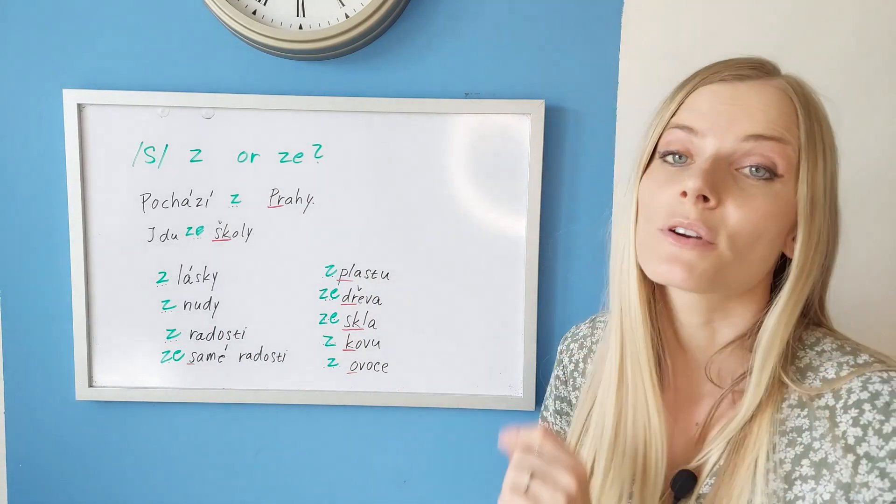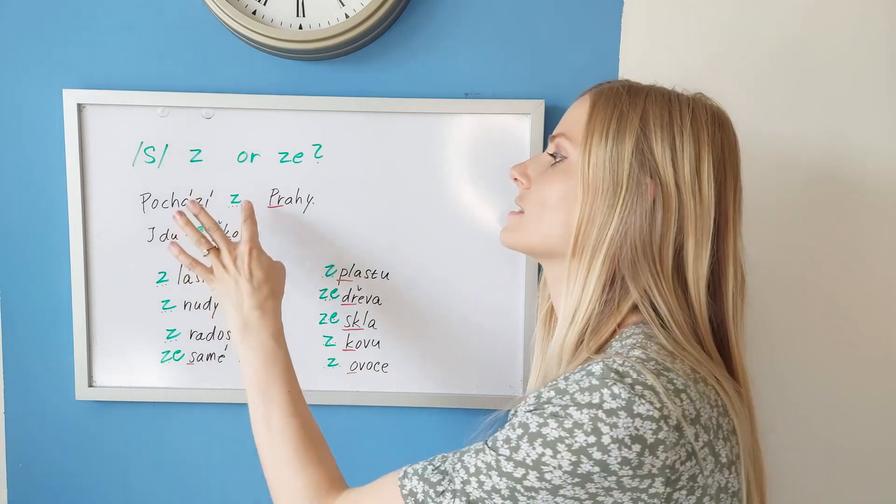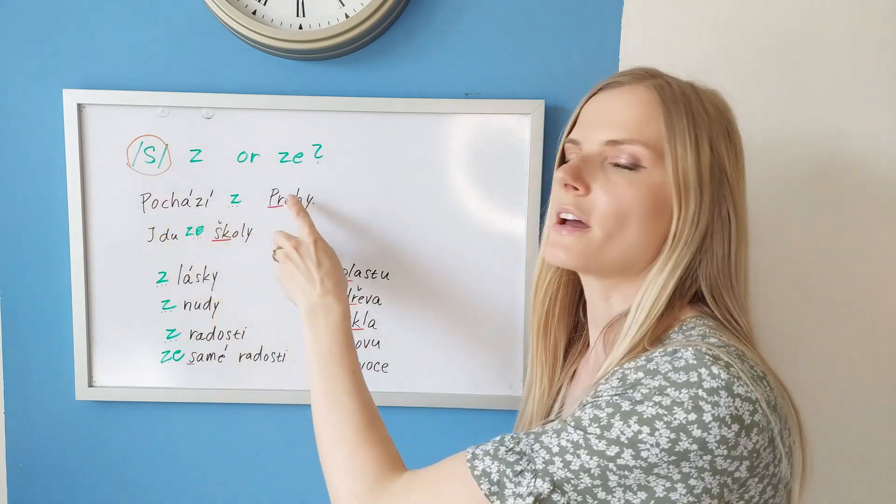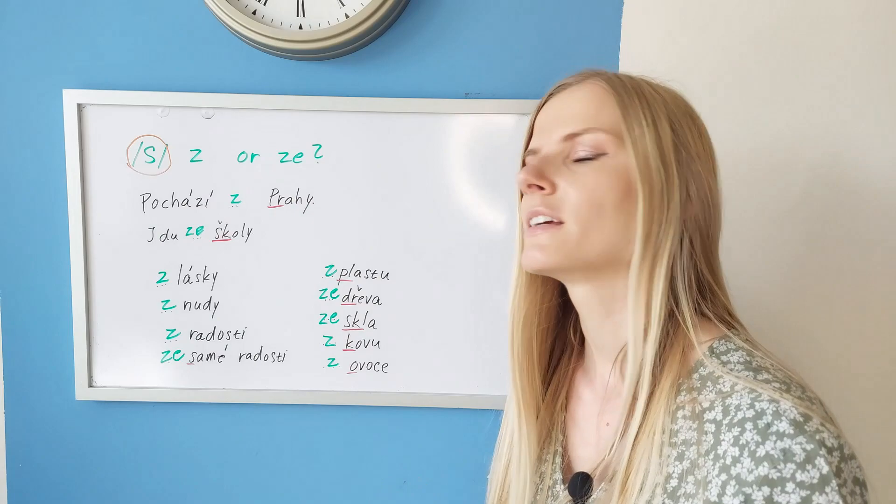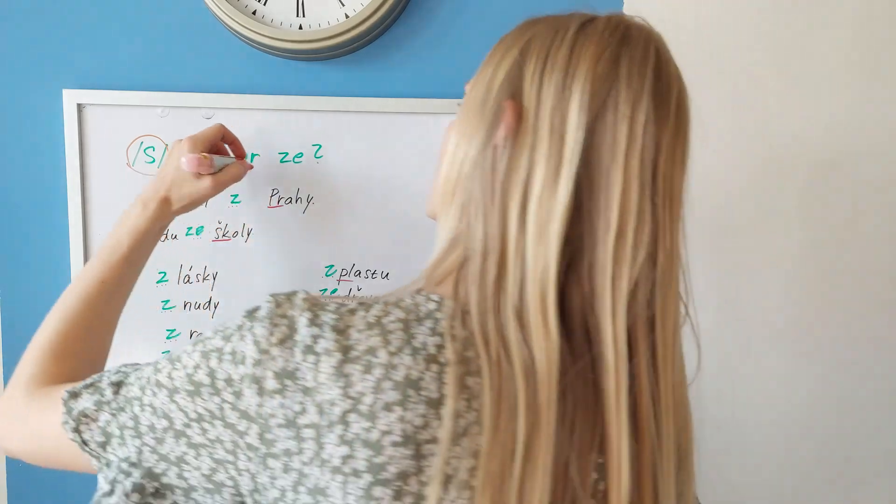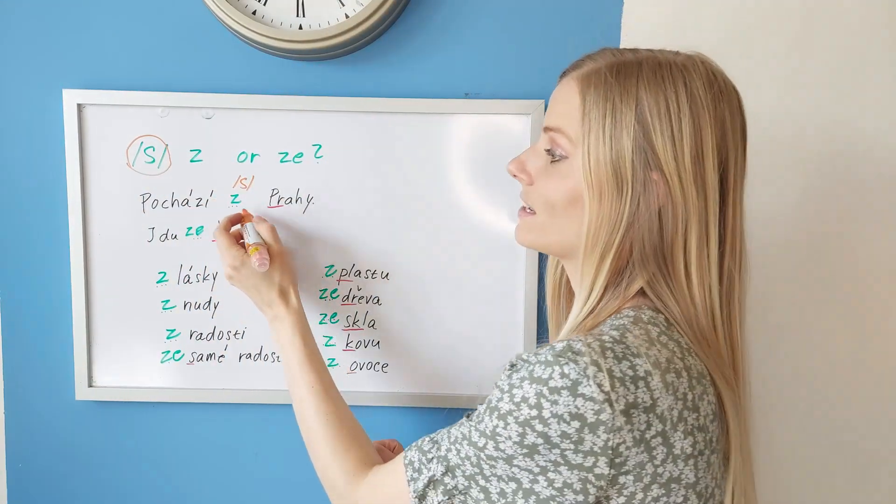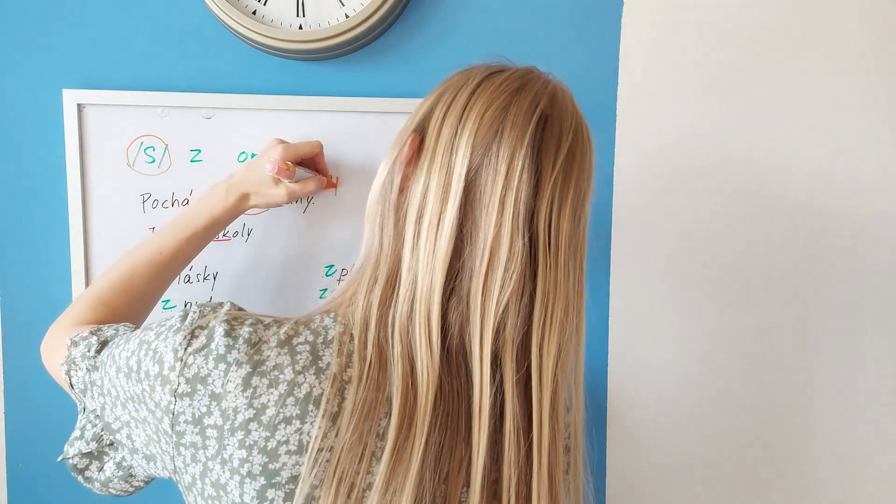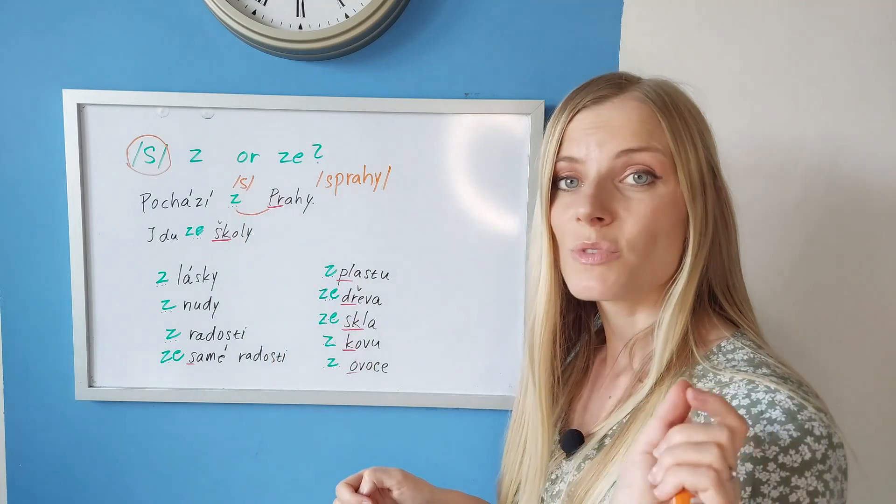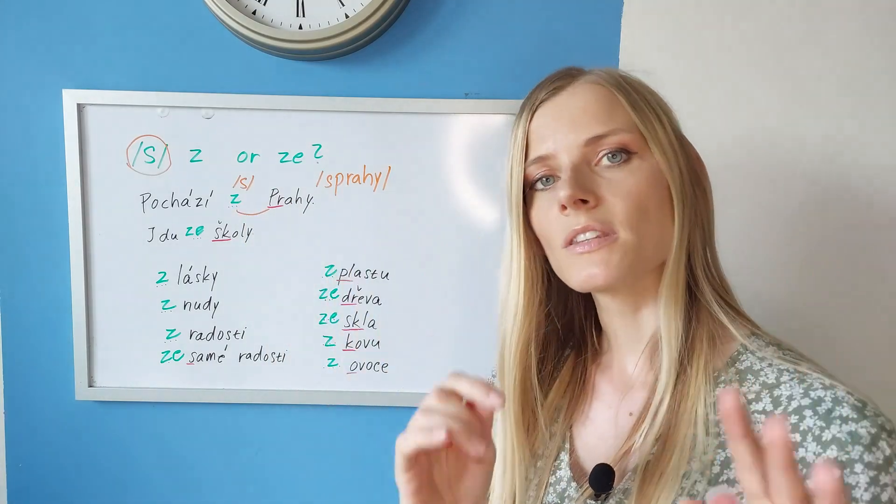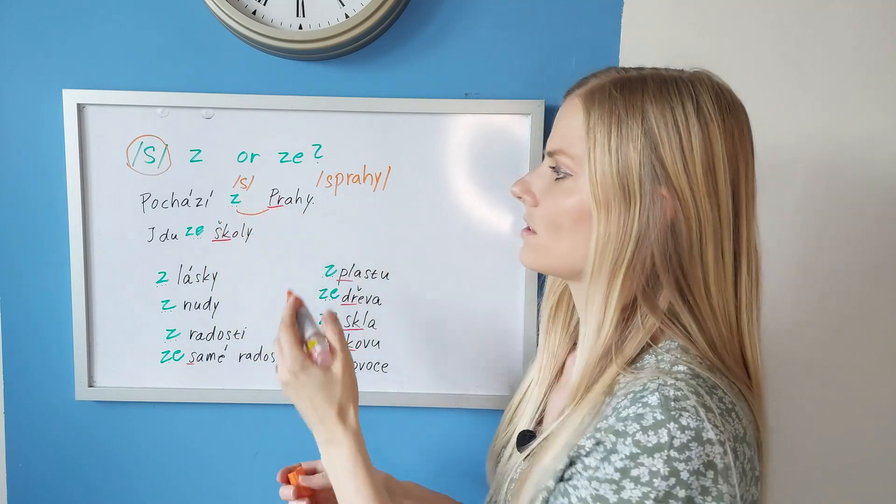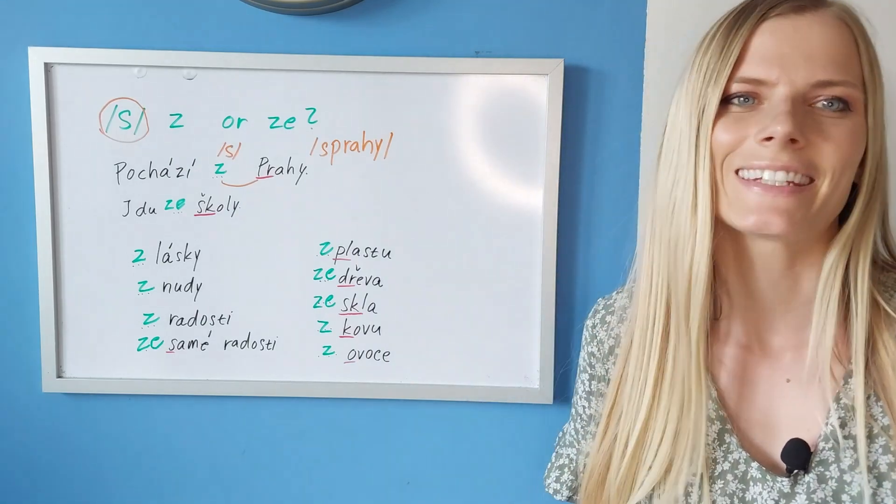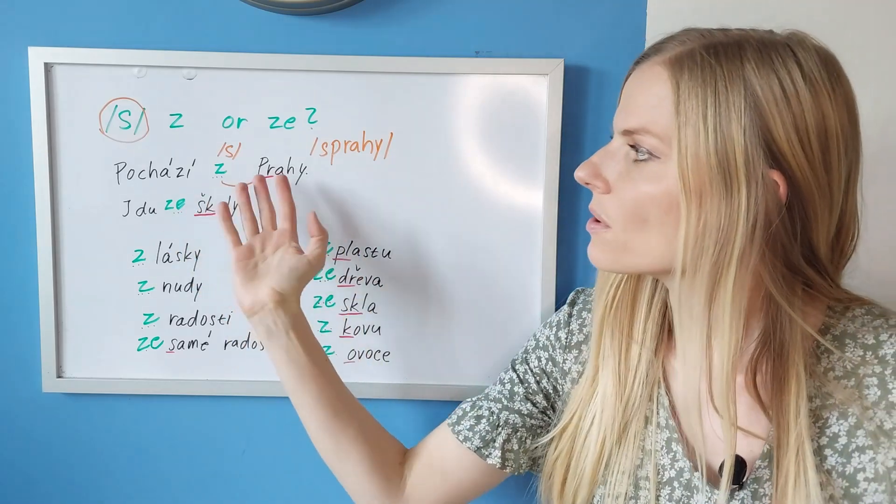Now one more thing about the pronunciation. Sometimes you can pronounce this as S. Listen to how I say the sentence. Pochází z Prahy. Did I say z? Did you hear that? No, I say s Prahy. Here this is read as S. And even these two are read together - s Prahy. It sounds as if it was one word. And this is how we pronounce it. When the preposition is just one letter, we connect it with the following word. And sometimes it can be affected by the letter that follows it. I'm gonna give you a mini pronunciation lesson.